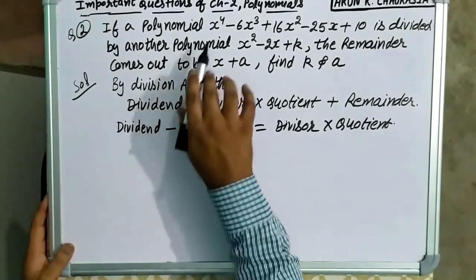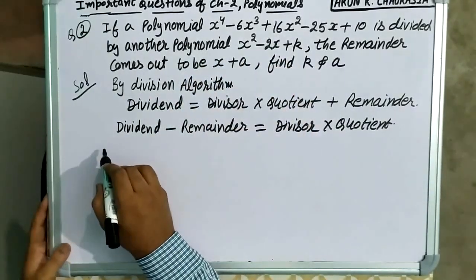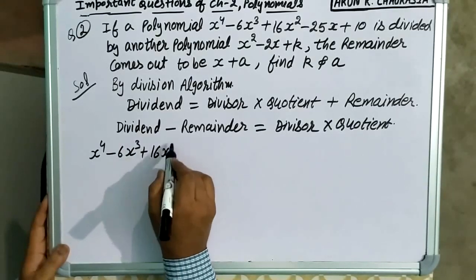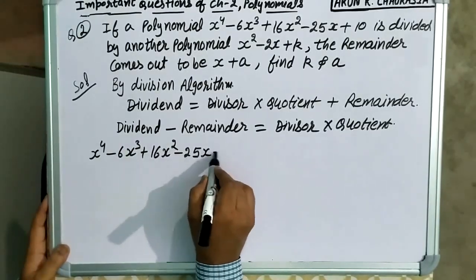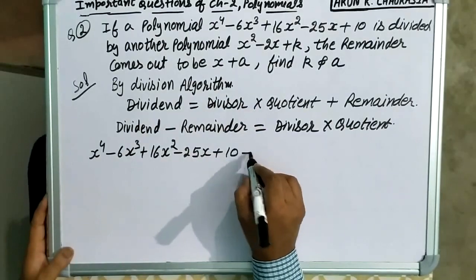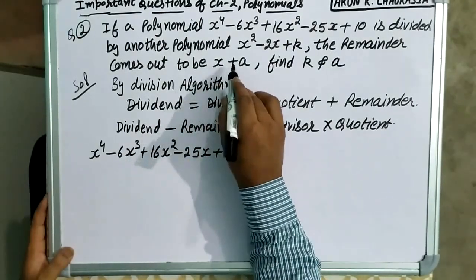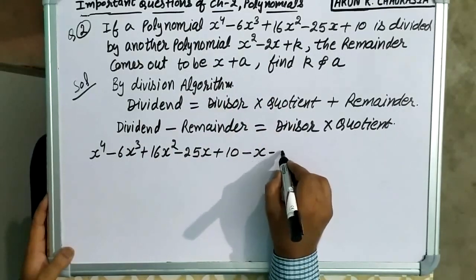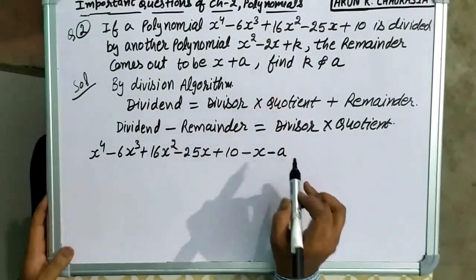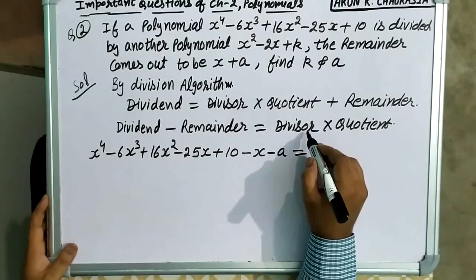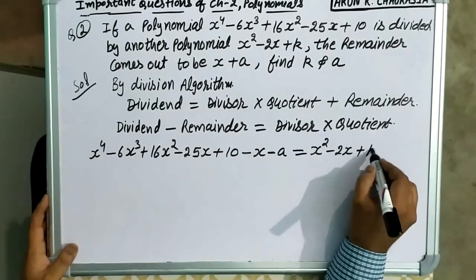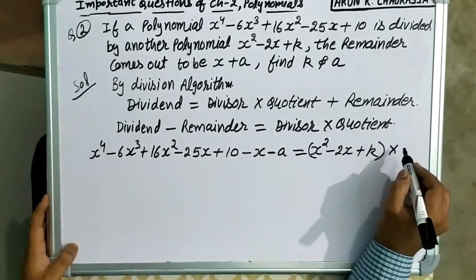अब यहाँ पर dividend है, जो की 4th degree की polynomial है. minus remainder — remainder यहाँ पर x plus a है, तो जब minus करेंगे, minus का sign आएगा, तो x भी minus और a भी minus हो जाएगा, क्योंकि bracket के बाहर minus sign लगाएंगे. equal to divisor, divisor है x square minus 2x plus k.